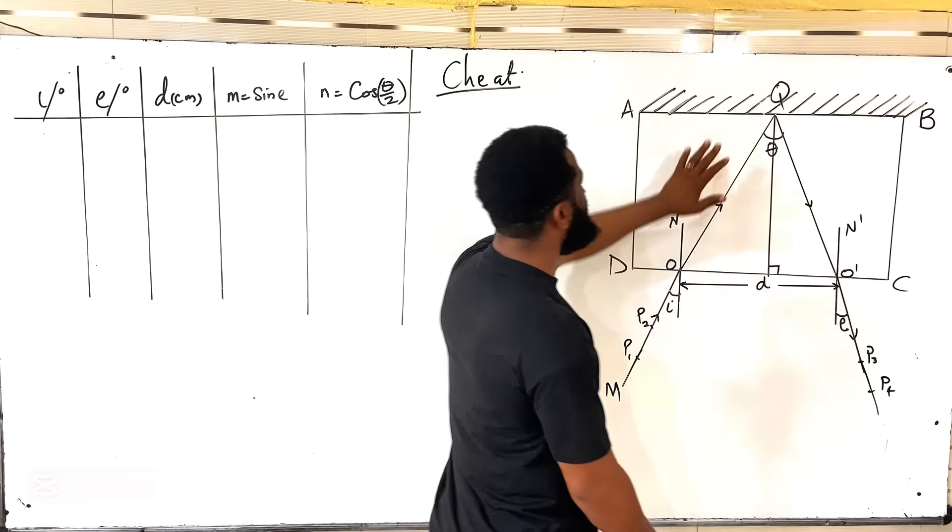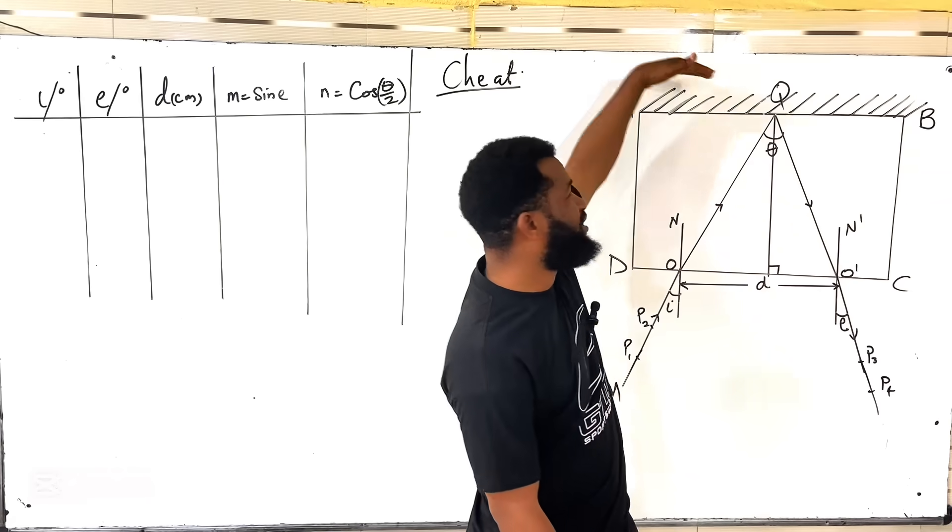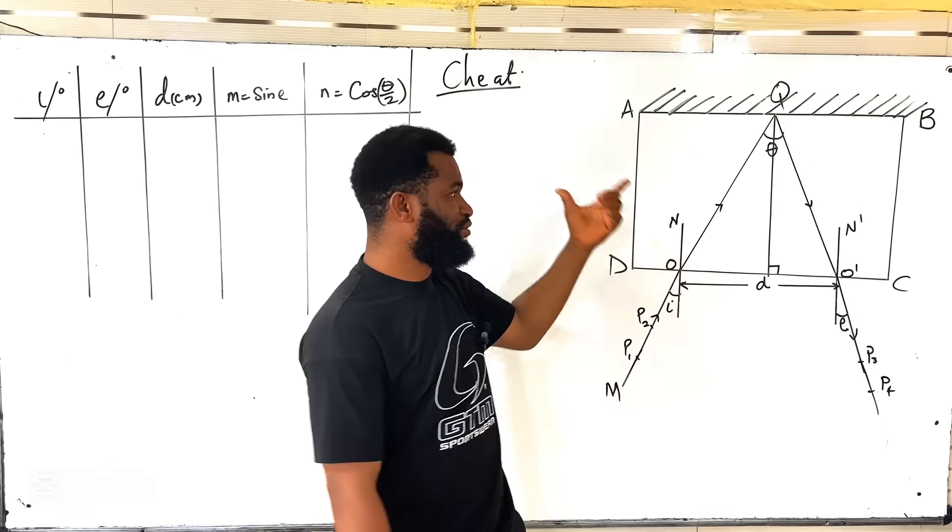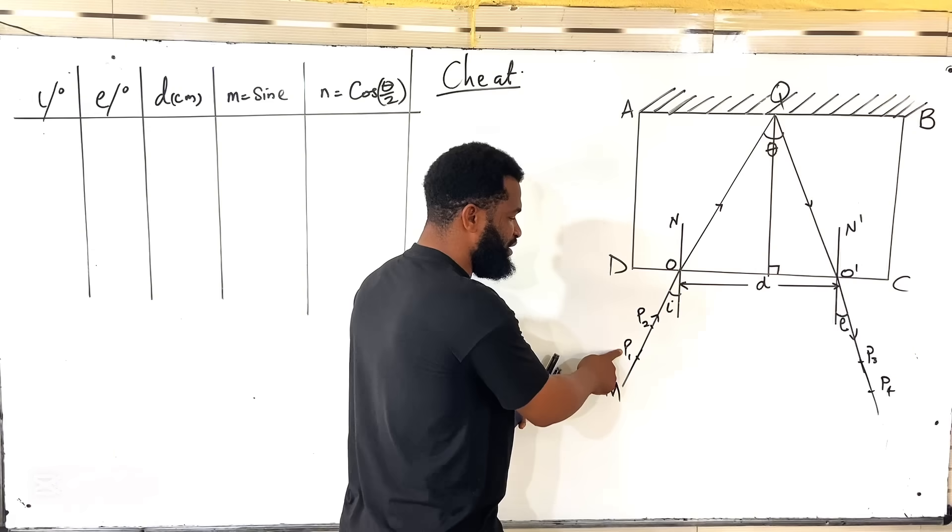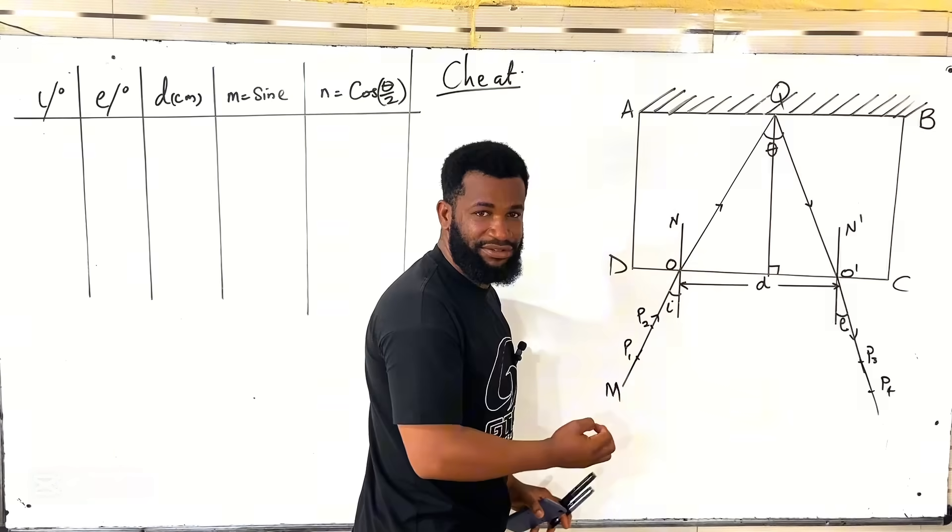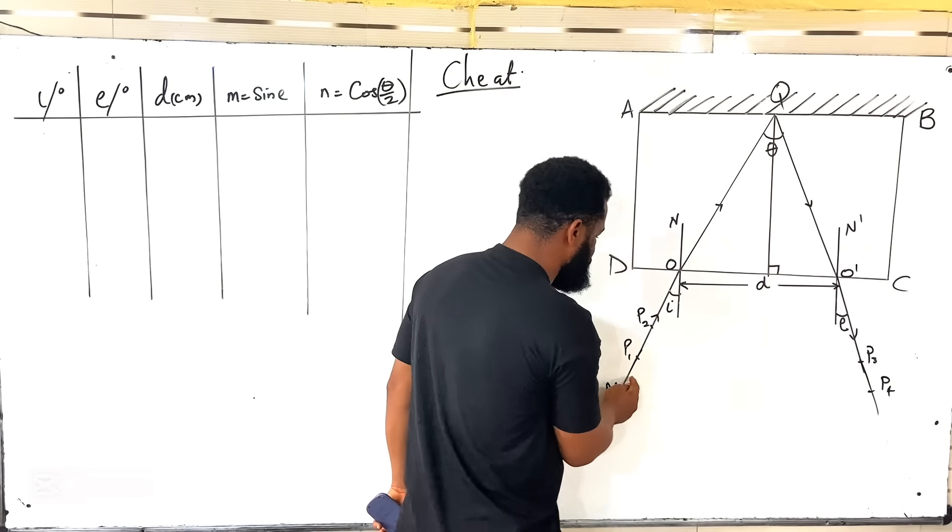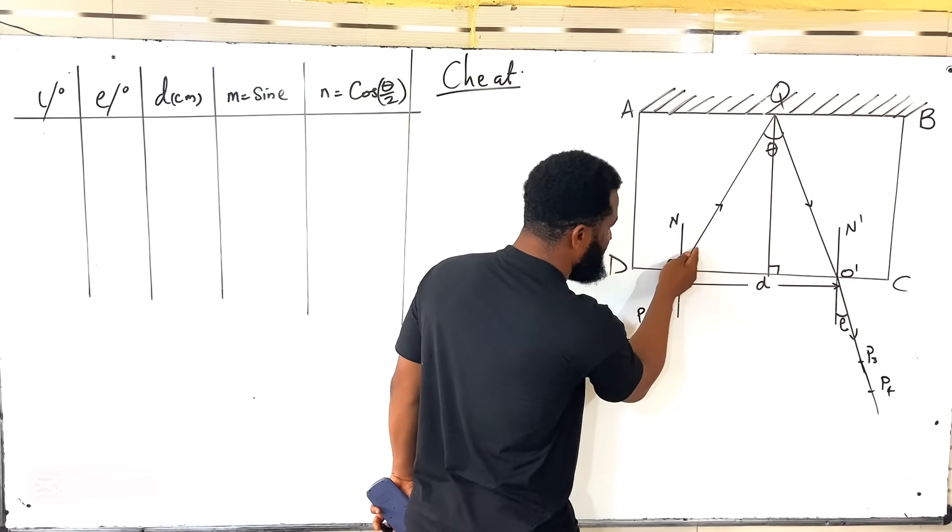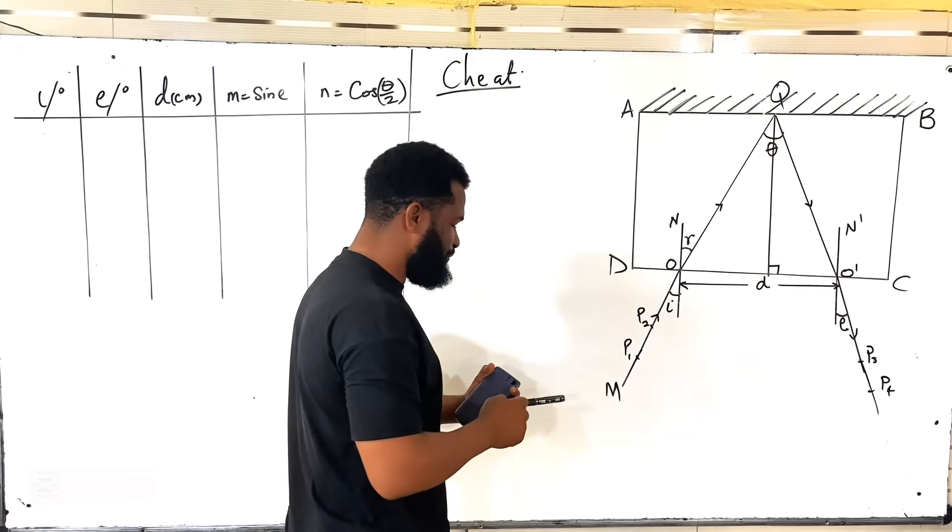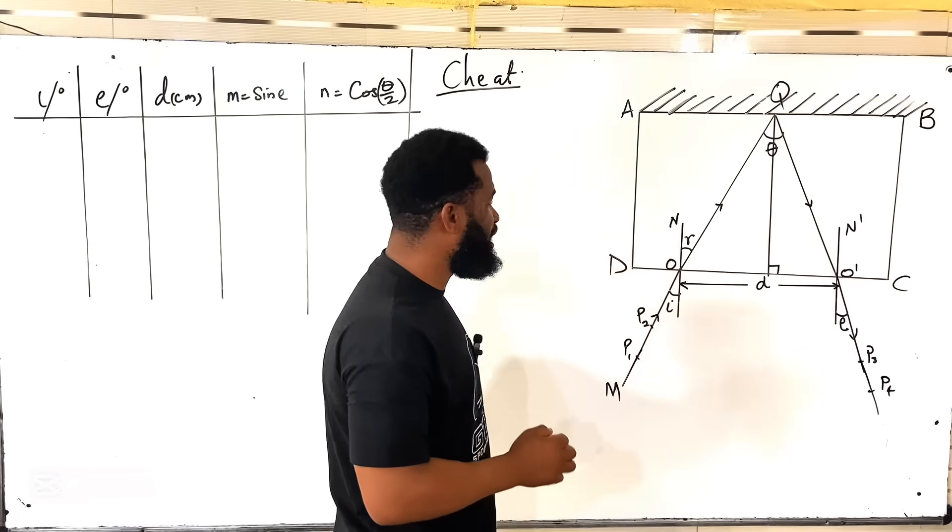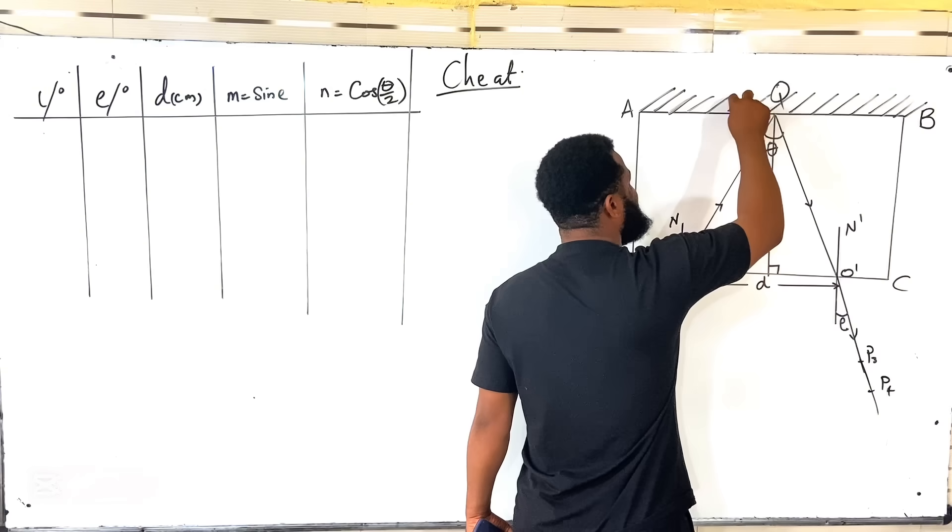The first thing is, this is a rectangular block ABCD. This sign you are seeing with this line is the mirror placed behind it. I am also going to upload the video of how to do the practical. P1 and P2 are the pins which trace the incident ray. This is the normal angle 90 degrees. When you trace these pins, they will enter, deviate - this is the refractive ray. This is the refractive angle.